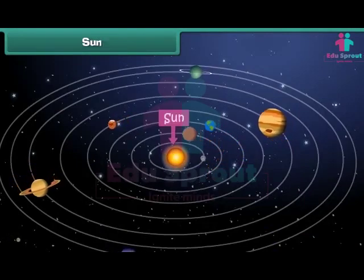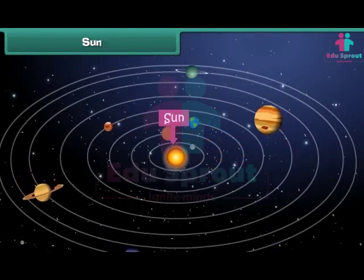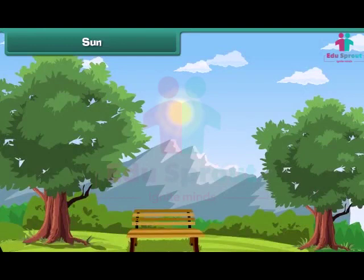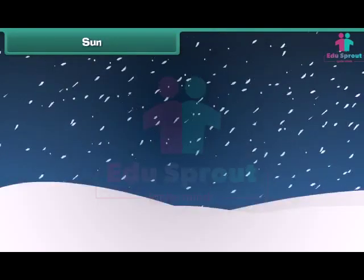The sun is the head of the solar system. It is a star which emits its own light. Sunlight is very important for the existence of life on earth. Without sunlight, earth would have been very cold and could not have supported life.